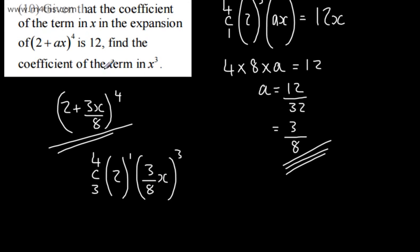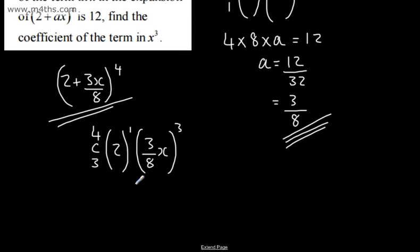We don't need the x in here, we just need the coefficient. So what we're going to have is 4C3. Again, we could use a calculator or we could remember this from Pascal's triangle. 4C3 is going to give me 4 times by 2 and then we're going to multiply this now by 3 over 8 cubed. So that's going to be 27 over 512.